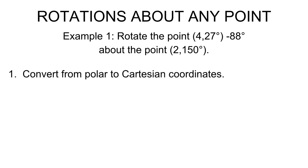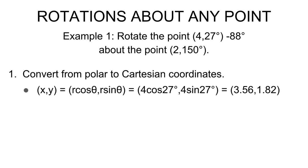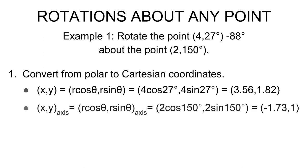Let's convert from polar to Cartesian coordinates. Our point in x and y is (3.56, 1.82). Our axis point in Cartesian coordinates is (-1.73, 1). And of course, you can take the time to go through these steps more slowly, but I'll let you do that on your own.